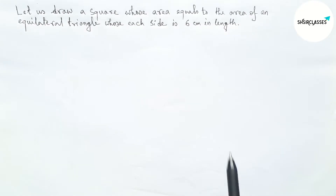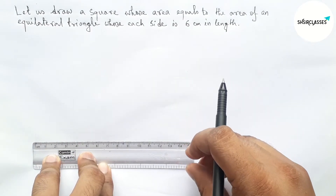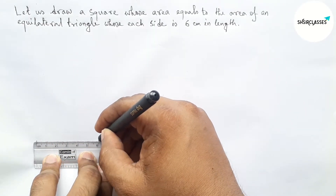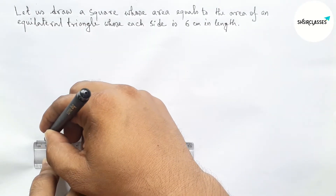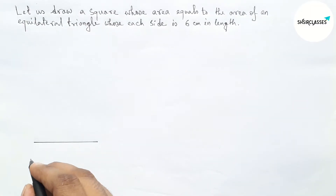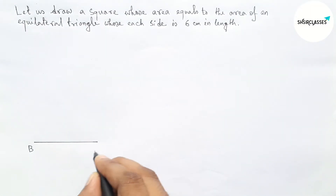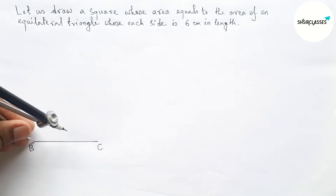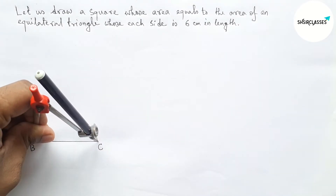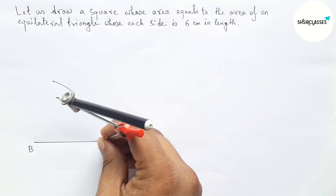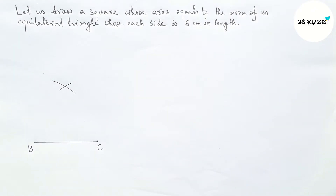First of all, let us construct the equilateral triangle. Drawing a line segment of length 6 centimeters. Now taking point B here and point C here. Next, measuring the length BC with the help of a compass. Now drawing an arc with the same length and cutting here.